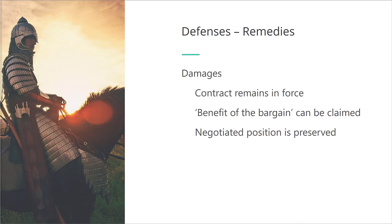The result here is that a party can ask for its beneficial negotiated position under a contract to be preserved. Given these two options — restitution and rescission or damages — which remedy should a party invoke? The answer is that it depends on the type of defense that is being invoked, the election of the party, as well as the circumstances. Before we look at the defenses in more detail, let's start with an example to illustrate some of the considerations in this regard.